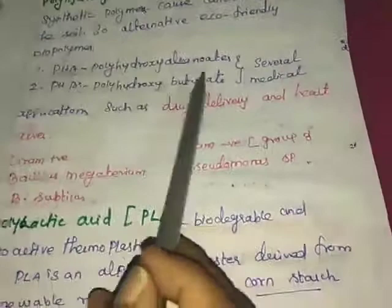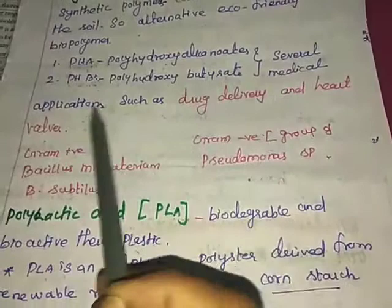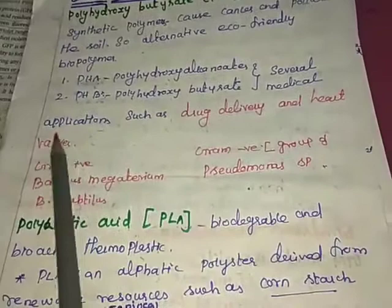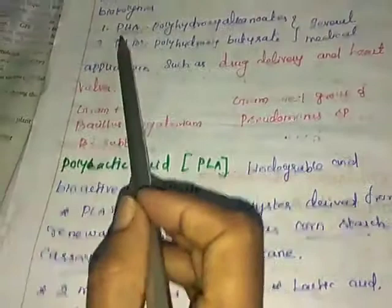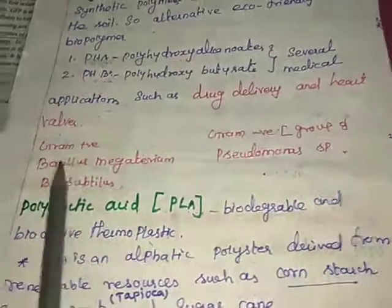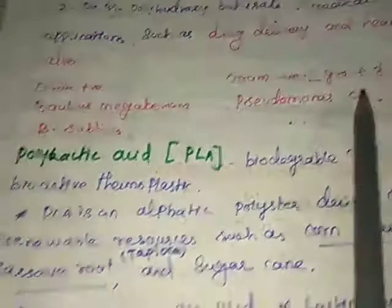These biopolymers have several medical applications such as drug delivery and heart valves. The production of PHA involves several microorganisms, including gram-positive and gram-negative bacteria. Gram-positive bacteria include Bacillus megaterium and Bacillus subtilis. Gram-negative bacteria include a group of Pseudomonas species.